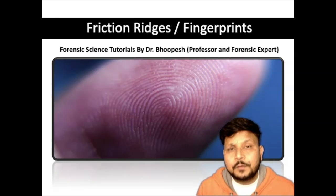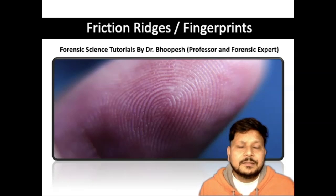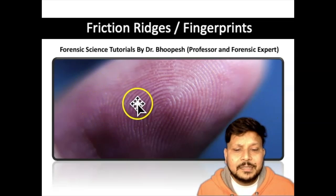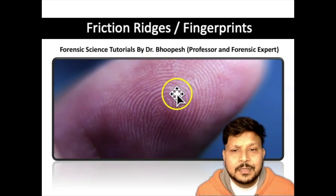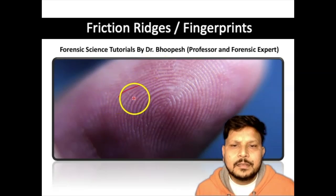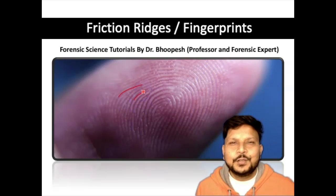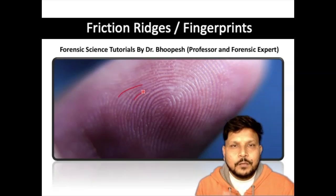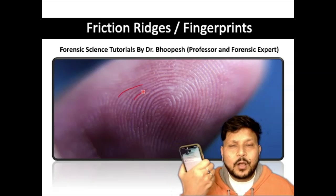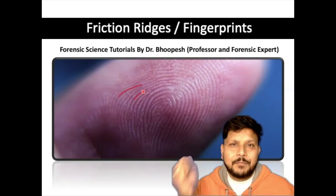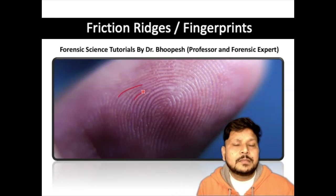You might be asking why we have fingerprints at all. As you can see on the screen, these fingerprints are actually the friction ridges. You can see the ridges and the furrows — a ridge and then a furrow — and together they make the friction ridges. Friction is what you need to hold a surface; for example, I can hold my mobile because of friction, so I can grip and grab things.